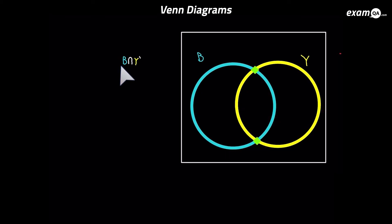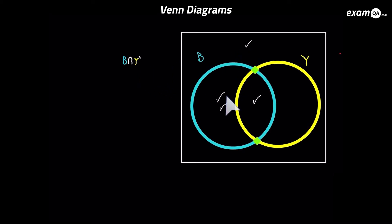Here's another tricky one. Let's do the ticking method — tick every place where it's B, and every place where it's not Y. The outside is not Y, and here is not Y as well. Going back to the question, it's got AND — an intersection — so it wants both at the same time. Which region is double-ticked? Which region was in both cases?